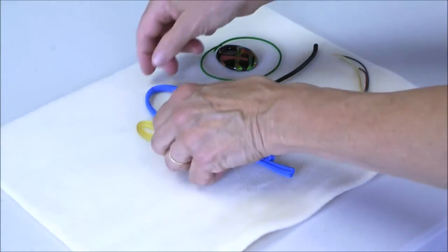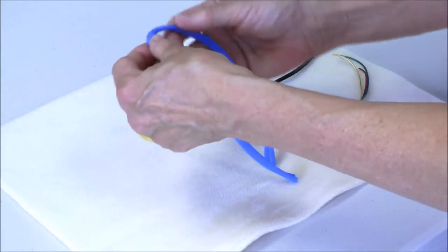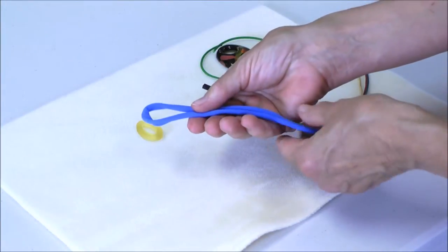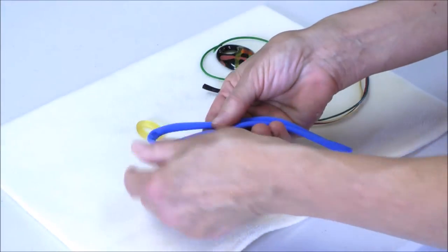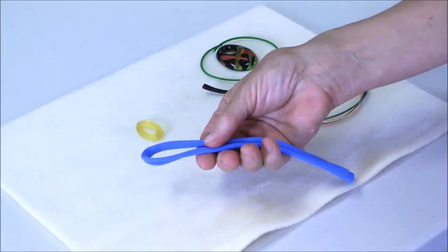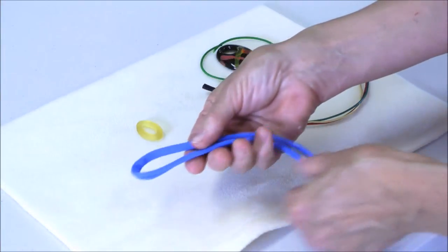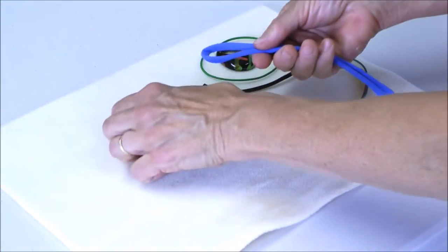So to make a basic lark's head knot, I have here a piece of pre-stretched lycra ribbon. For more information on lycra ribbon, please see our video on lycra. I'm going to fold it in half with a loop at the top.